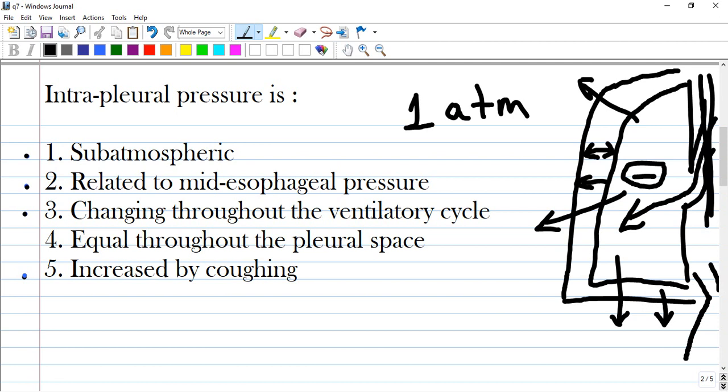A catheter is inserted inside the esophagus and a balloon is inflated. By this method, intraesophageal pressure is measured, which is equal to the intrapleural pressure.